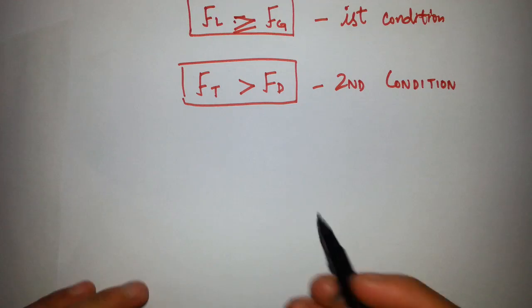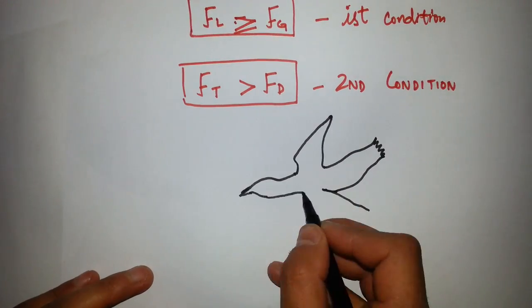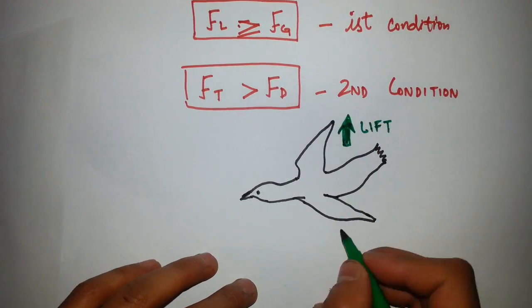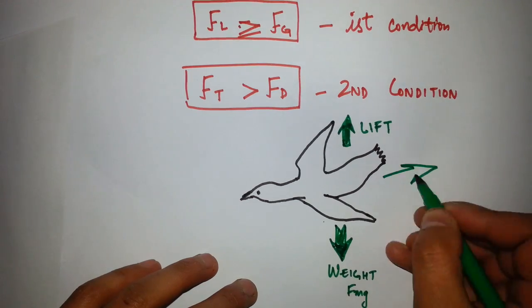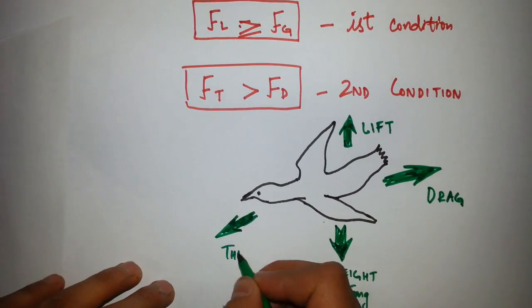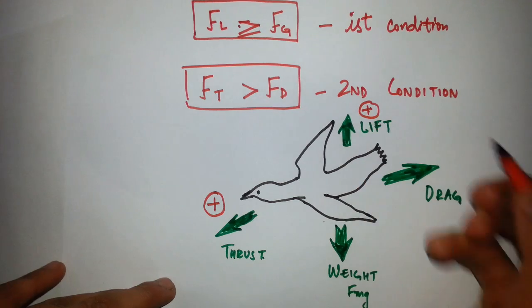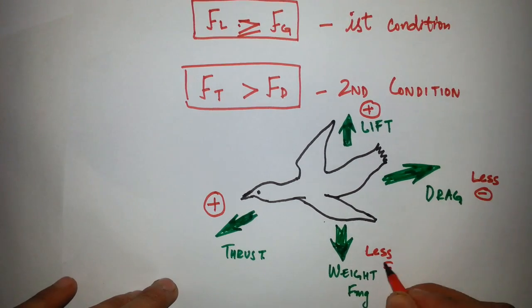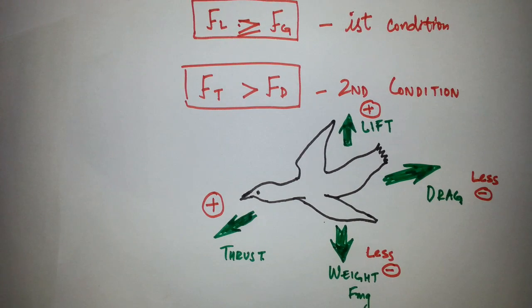You can see in this diagram the lift force, the drag force, the weight (that is the force due to gravitation), and the thrust. The lift force and thrust force are the two positive forces due to which the bird flies, and weight and drag force are the negative forces due to which the birds cannot fly because they resist the flight of birds.